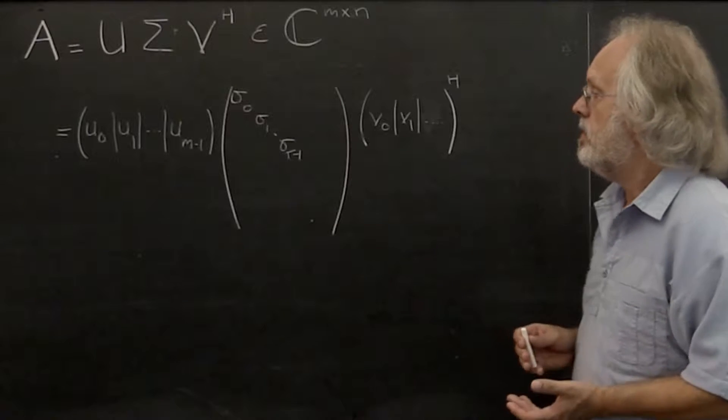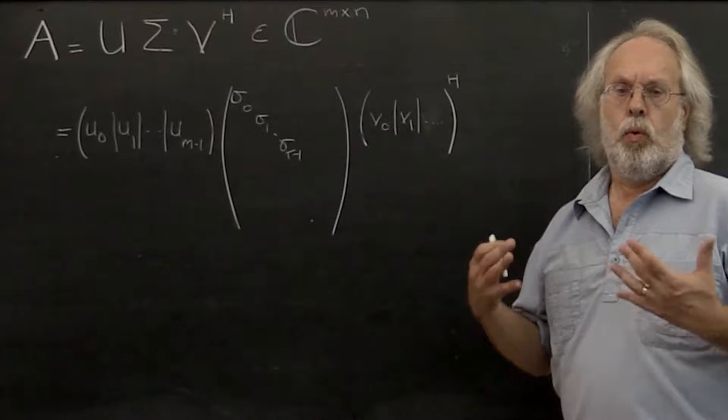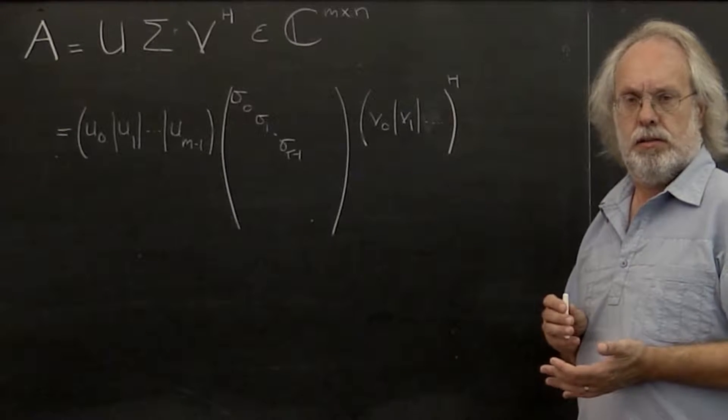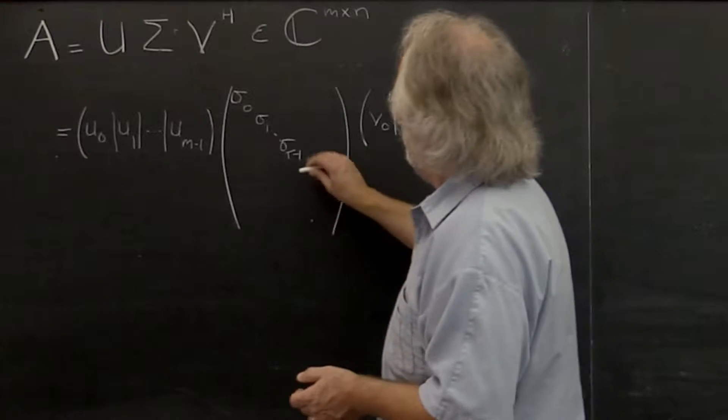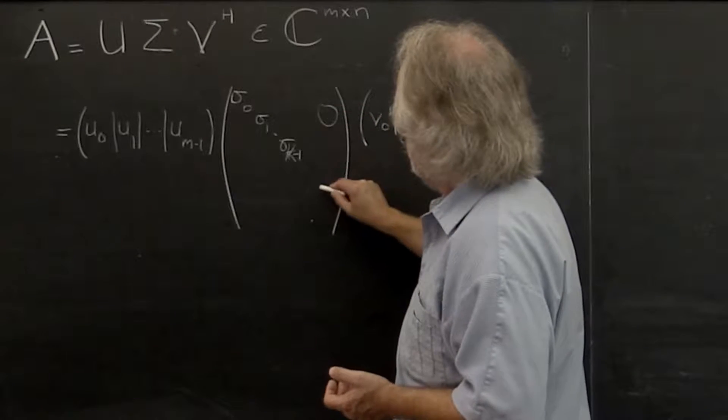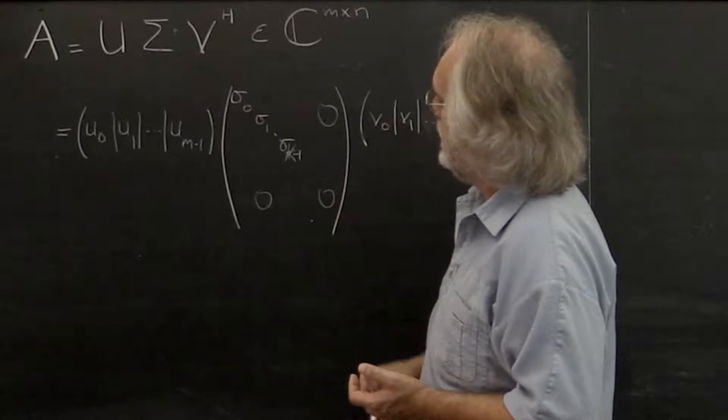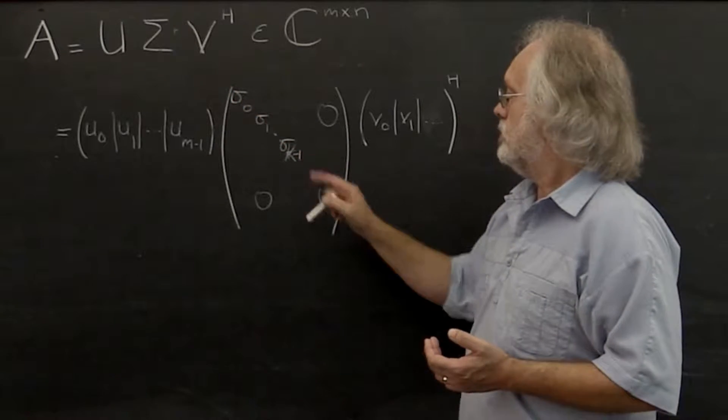Now how can you detect what the actual rank of matrix A is? Well, it turns out that if you cut this off after k singular values and set the rest to zero, and remember that the singular values are ordered from largest to smallest...